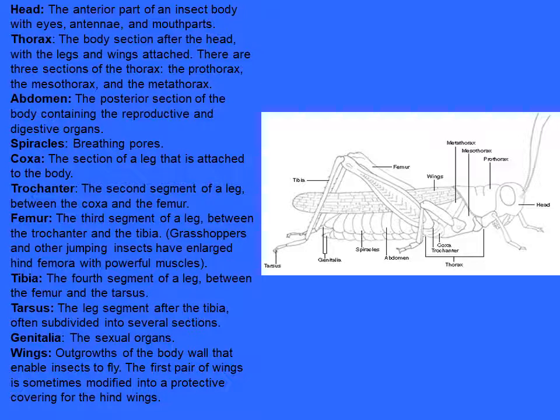Each leg — and there are three pairs of legs in most insects — comprises major parts. The coxa is the section of the leg attached to the body. This is followed by the trochanter, which is the second segment of the leg between the coxa and the femur. The femur is the third segment, between the trochanter and the tibia.